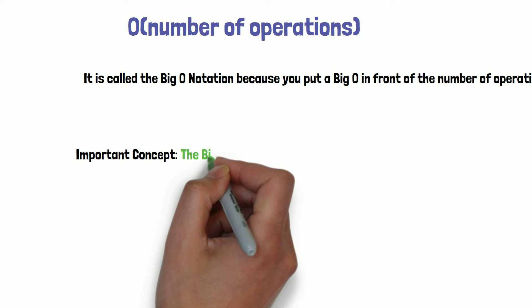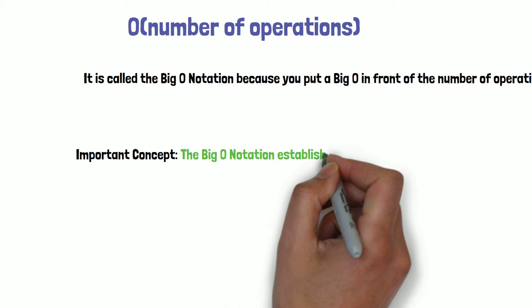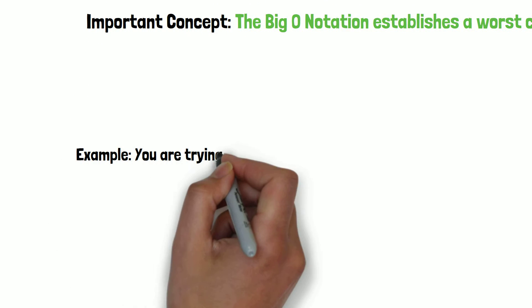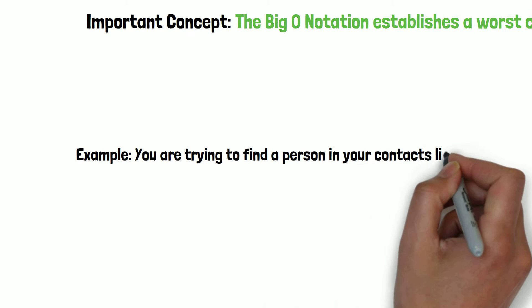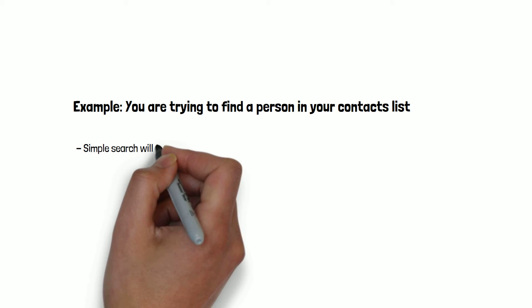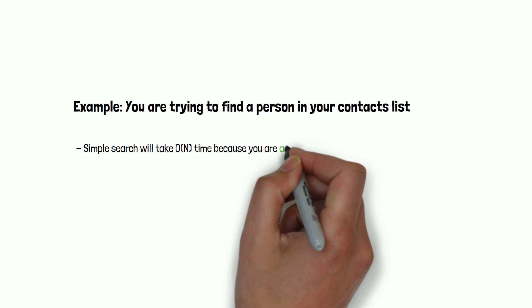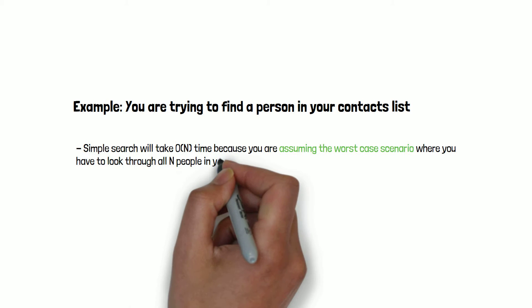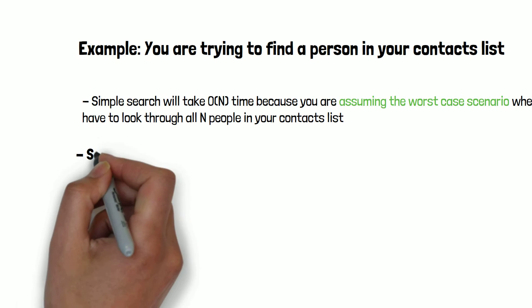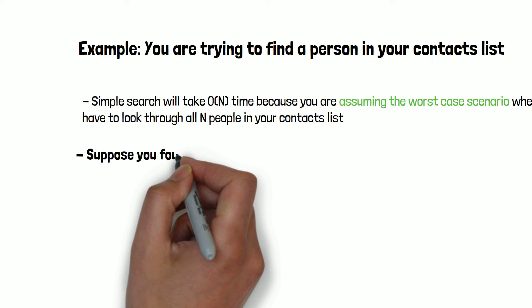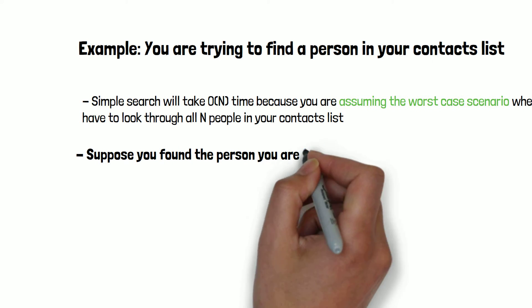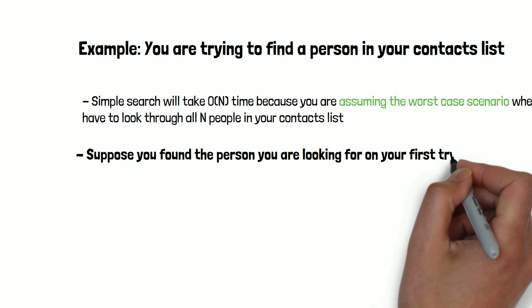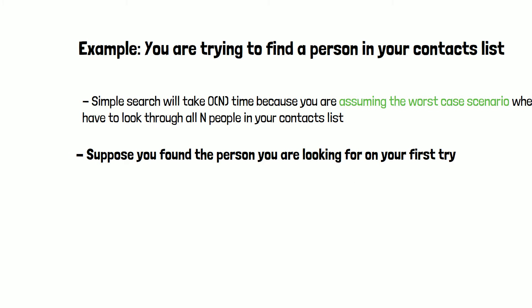Now, it is important to understand that the Big O notation establishes a worst-case runtime. So, suppose you are looking for a person in your contacts. You know that using simple search will take O(n) time to run, which means in the worst case, you have to look through everyone in your contacts. Now, let's say you are looking for your friend Adam. He is the first entry in your contacts.